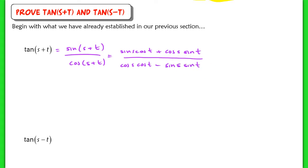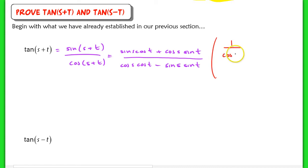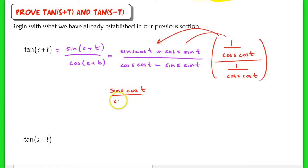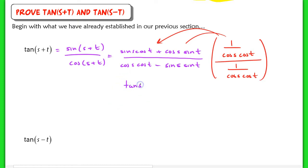Maybe this is where you got stuck because you couldn't remember what to multiply by. In this case, you want to turn these back into tangents. What we're going to do is multiply by 1 over the cosine of s times the cosine of t in both the numerator and the denominator. So it's 1 over cosine s times cosine t over 1 over cosine s times cosine t. If I multiply to the sine of s term, sine s multiplied by 1 over cosine s cosine t just turns into tangent times 1.